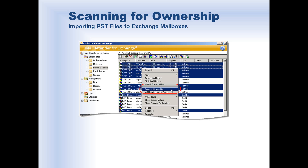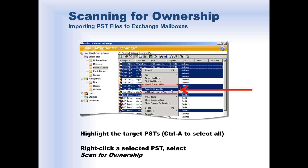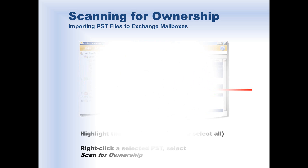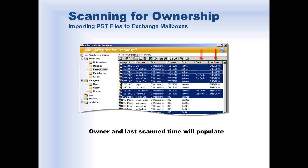To scan for ownership, simply highlight each PST file you would like to scan, then right-click on one of the selected PST files and choose Scan for Ownership in the pop-up menu. As the scanning of each file finishes, the Last Owner Scan column will display the date the scan completed, and the owner name will appear in the Owner column. If MailAttender isn't able to find a definitive owner, it maintains a list of top potential owners based on the user names found on the messages, which you can then use to assign ownership.